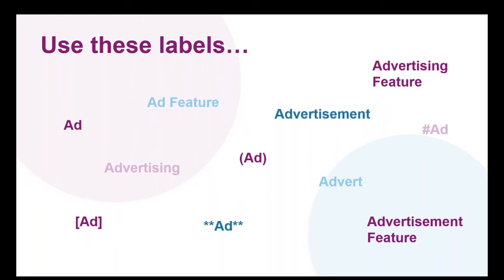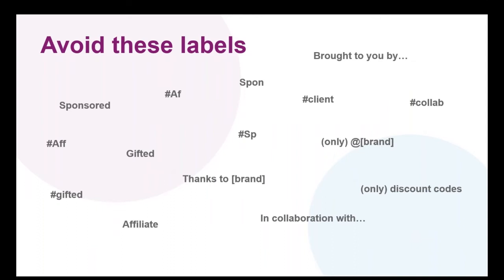Although neither the CMA nor the ASA is technically prescriptive about how disclosure should be made, by far the easiest and safest approach is to use a label that just says it how it is. In the ASA's research, 34% of adults identified a Zoe Sugg post as definitely an ad in its original form, compared to 57% who saw a version with '#advert' added to the bottom right-hand corner in a colour contrasting clearly with the background. We generally recommend avoiding labels like SP, gifted, spon, affiliate, collab, and paid partnership as standalone disclosures — research showed 48% of those recalling 'SP' would not be confident explaining its meaning.